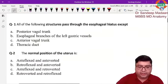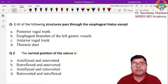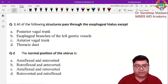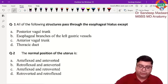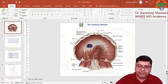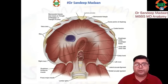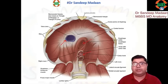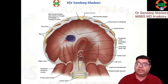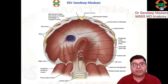Hello everyone, let us discuss CBT question number one: all of the following structures pass through the esophageal hiatus except. We know that in the diaphragm we have three openings: the IVC opening, the esophageal opening, and the aortic opening. Through the IVC opening, the IVC and the right phrenic nerve pass.